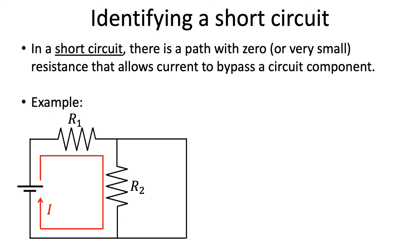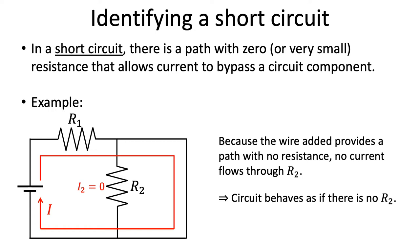But because the wire we just added offers a path with no resistance, the current will bypass R2.